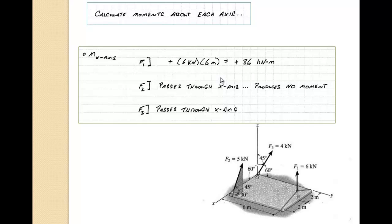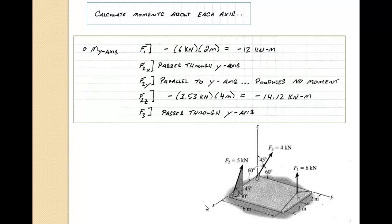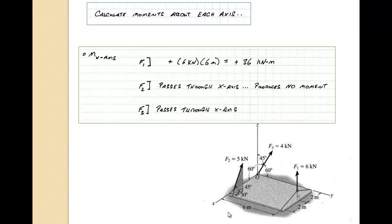Now we calculate the moments these applied forces create about each axis. About the X axis: F1, pointing in the Z direction, has a moment arm of 6 meters, giving 6 kilonewtons × 6 meters = 36 kilonewton-meters, and the rotation is counterclockwise, so positive. F2 passes through the X axis, so it has no moment arm and produces no moment. F3 passes through the origin, which by definition passes through the X axis, so it also produces no moment.